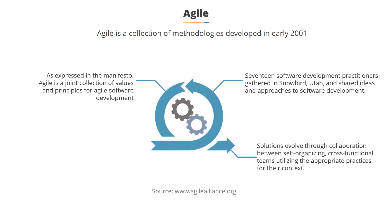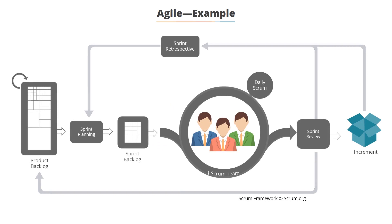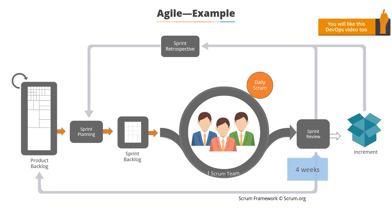Solutions evolve through collaboration between self-organizing, cross-functional teams utilizing the appropriate practices for their context. Here you have a diagram of the Scrum software development framework for Agile, where the product owner starts with the product backlog. The development team and the product owner scope the sprint backlog from it during a sprint planning meeting. The development team works on the sprint backlog, and the longest duration for a sprint cycle as per Agile is 4 weeks.